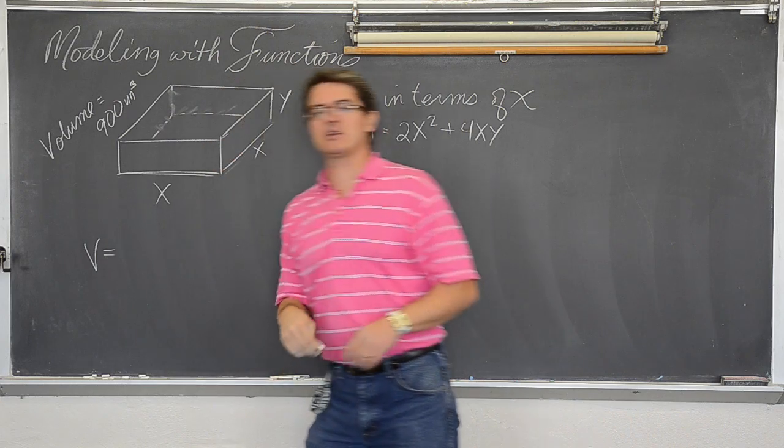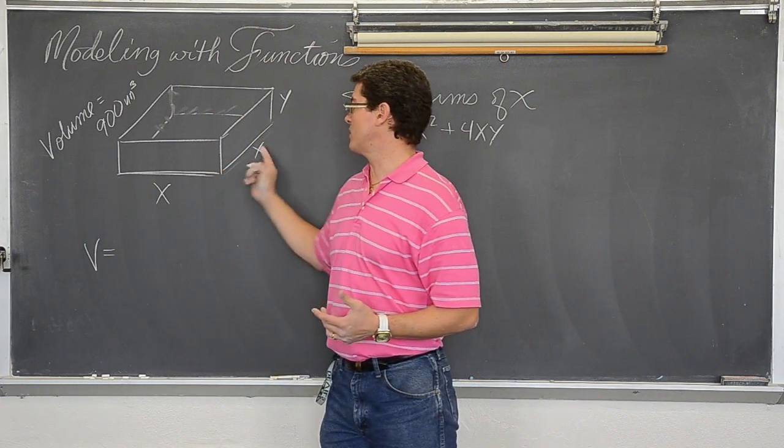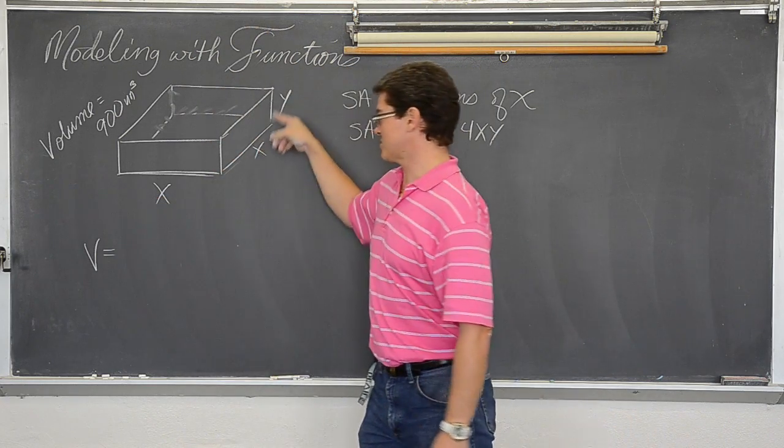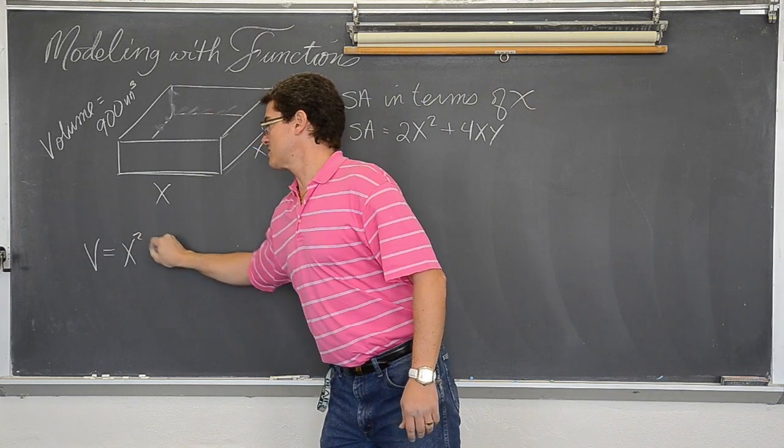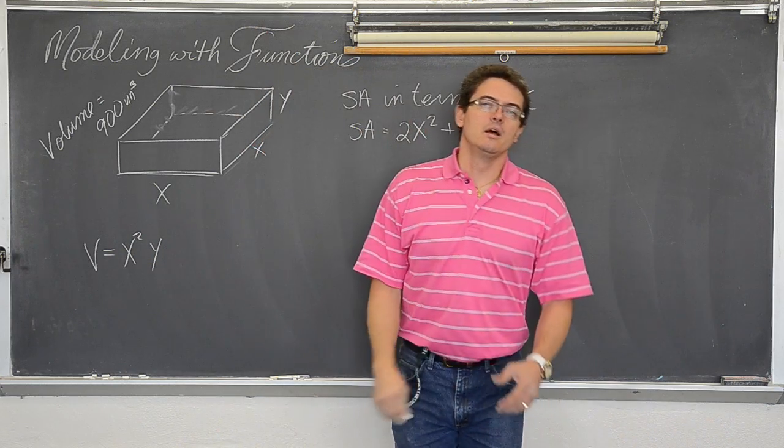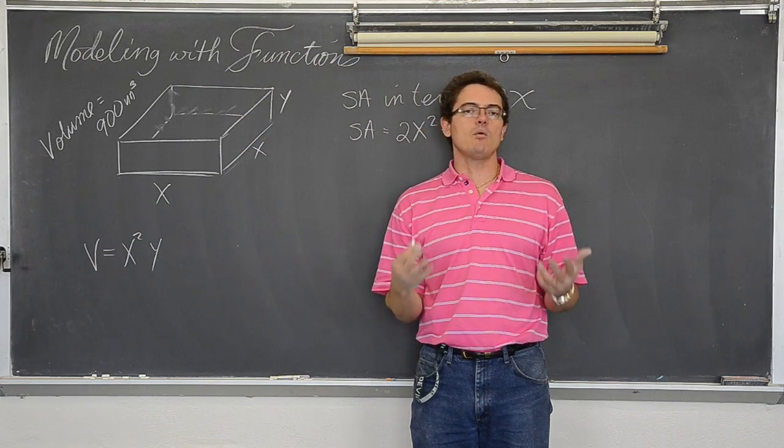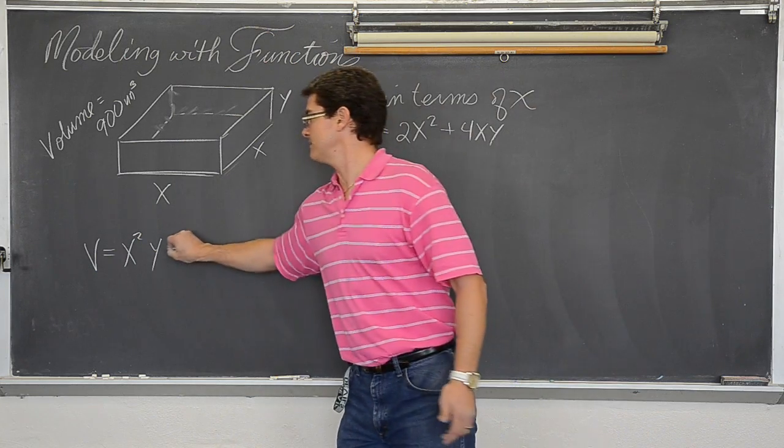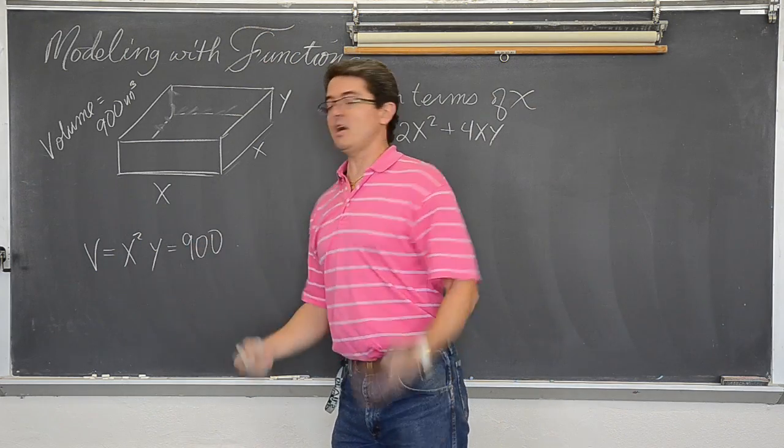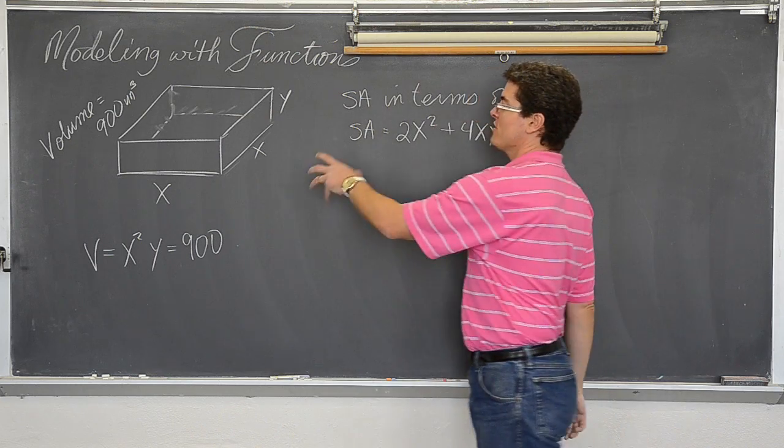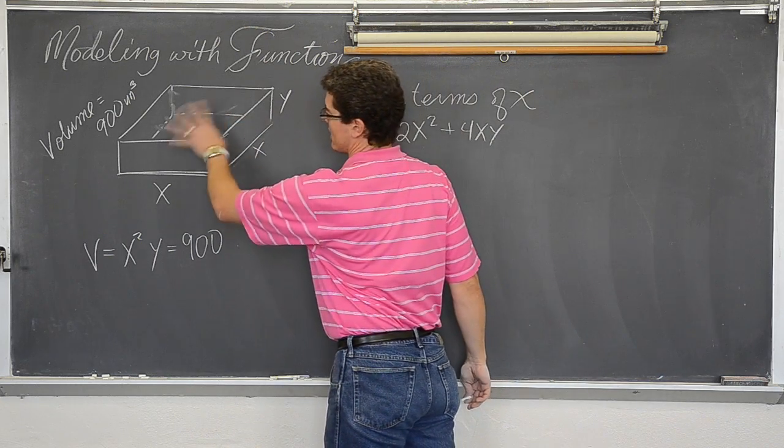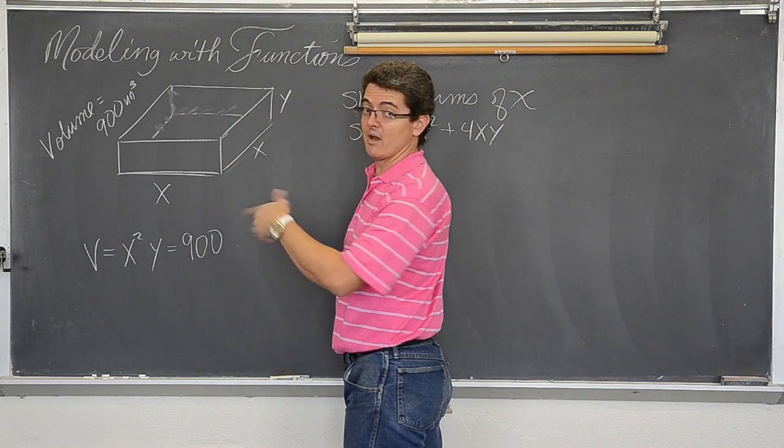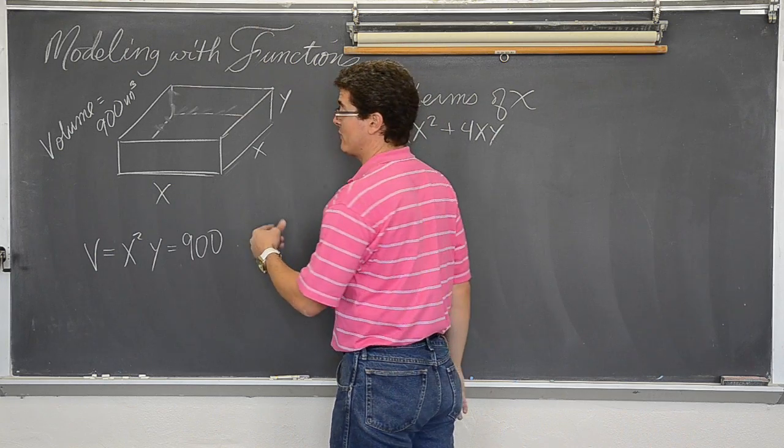How do you find the volume of a cube or a box? It is length, width, and height. So for this particular example it will be x² times y. Well, I don't want the volume to be just anything. I want the volume to be 900 cubic units. Alright. Good! So for this rectangular solid box, whatever you want to call it. It is not a cube by the way. I would have all three sides that would be the same if it was a cube.